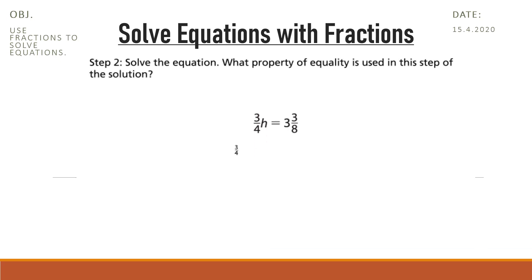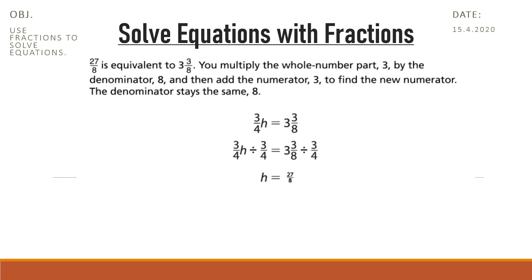Step 2: Solve the equation. What property of equality is used in this step of the solution? The division property of equality is used. What fraction is equivalent to 3 and 3/8? Explain. 27/8 is equivalent to 3 and 3/8.